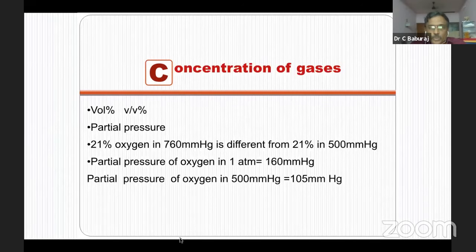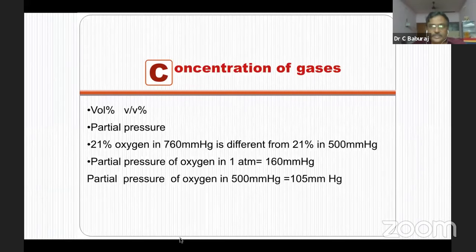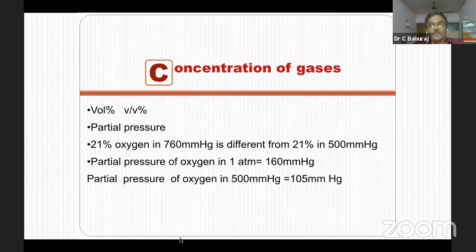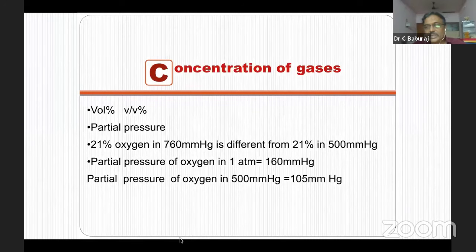You need to know some terminologies about how to express concentration. There are two methods: one is volume percentage — you say halothane one percent, isoflurane two percent, desflurane or sevoflurane seven percent. The other method is partial pressure, which is more accurate. When I say 21 percent oxygen, it doesn't mean anything without specifying pressure. If I say 21 percent oxygen in 760 mmHg at sea level, the partial pressure of oxygen is 160 mmHg.